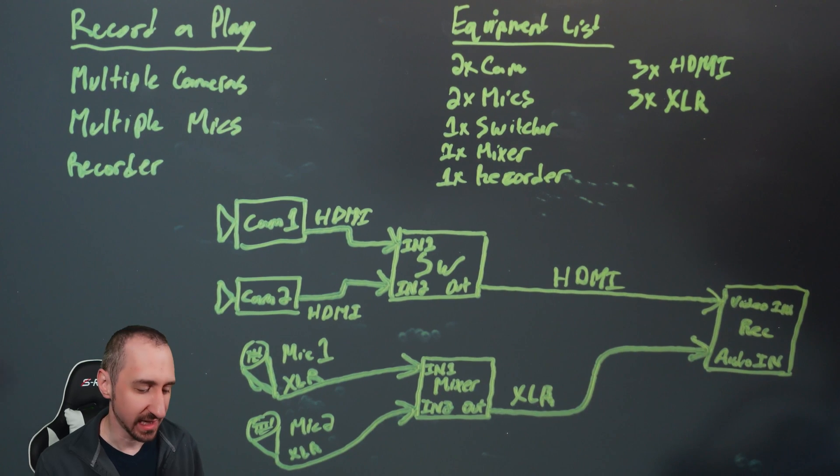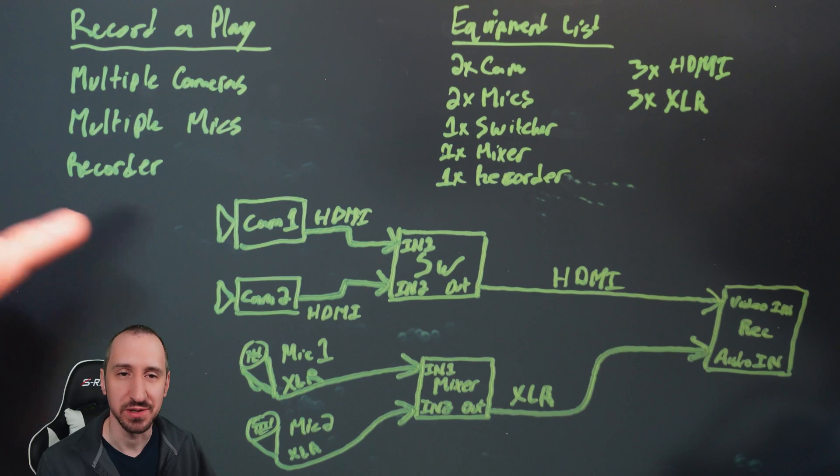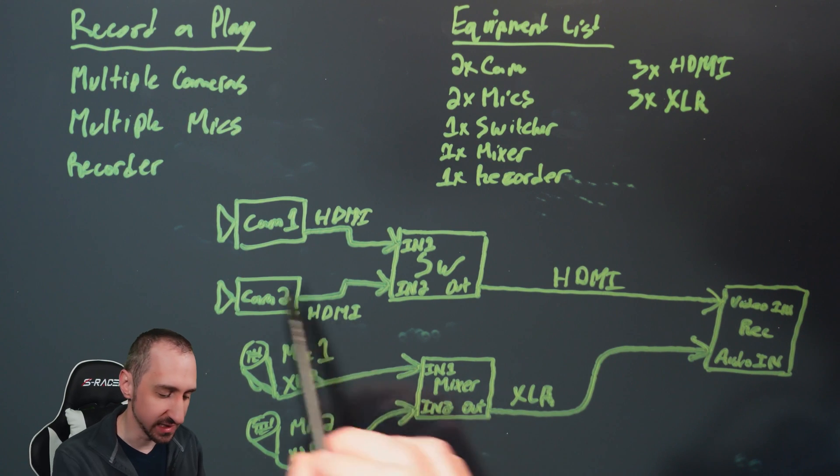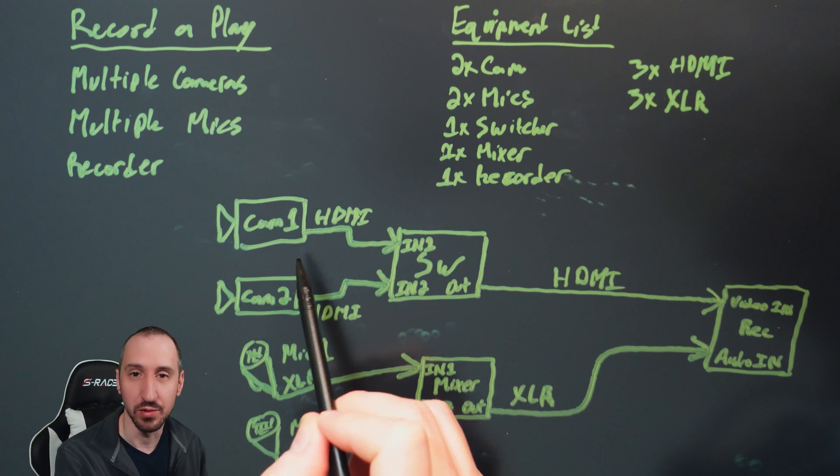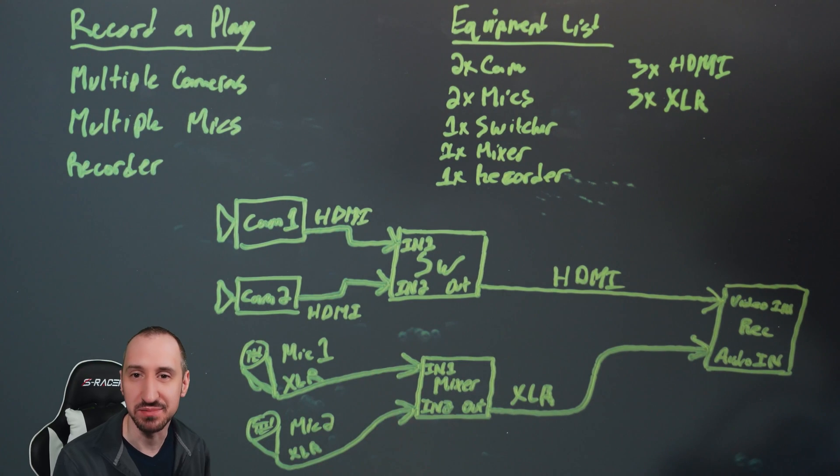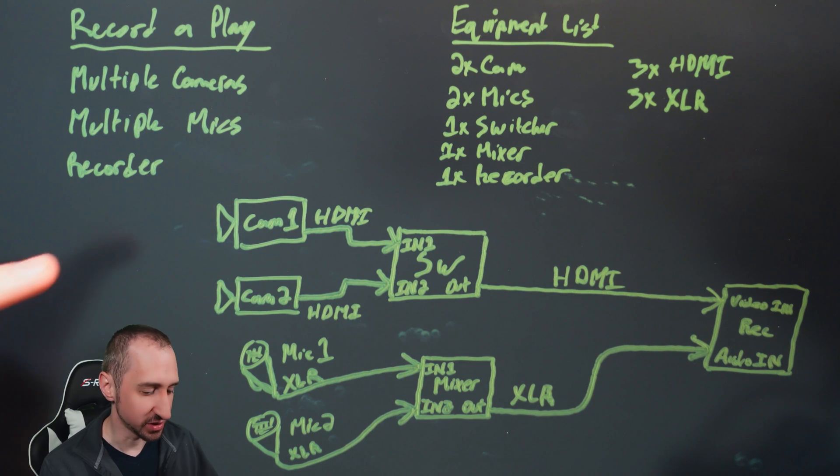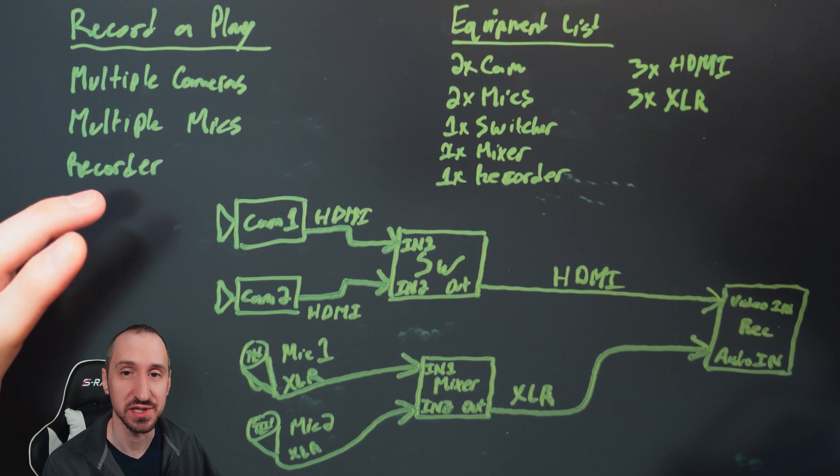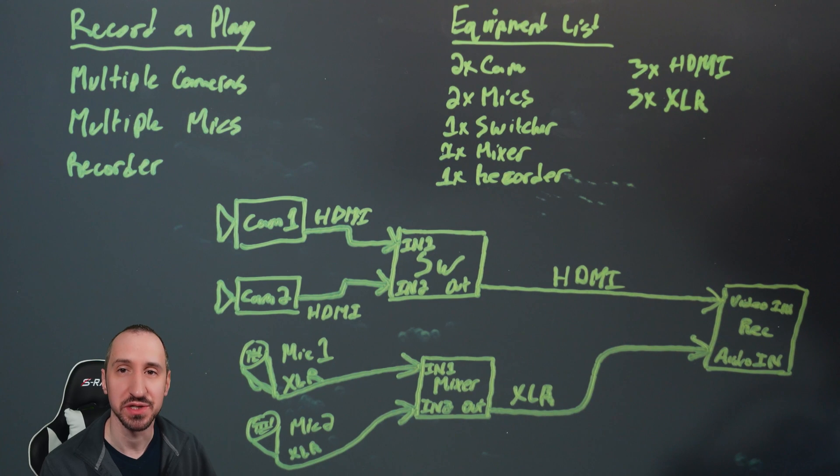And then from there we can hand this on a piece of paper, print it out, take a picture of it, copy it, whatever you need to do. And then you can hand it to somebody else and they'll also know what they need to connect. So they can work on camera two while you're working on camera one, or you can work on setting up the recorder or the switcher and the mixer while they work on both cameras and the microphones. So it definitely helps in terms of trying to distribute the tasks where you've thought about everything ahead of time, so it's your design that's going to accomplish the objectives that were laid out initially, but you don't have to do it alone. You have some help.